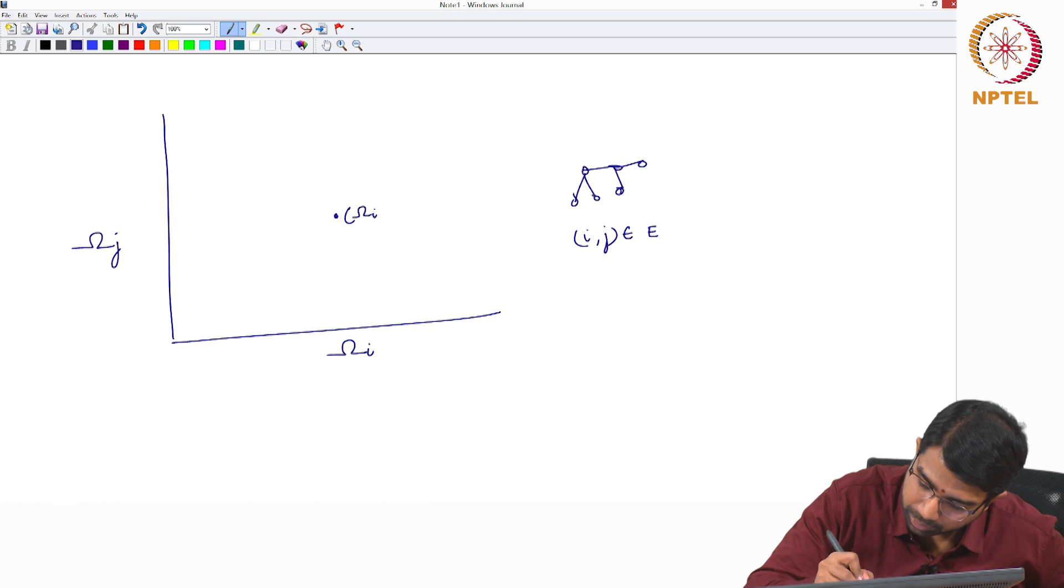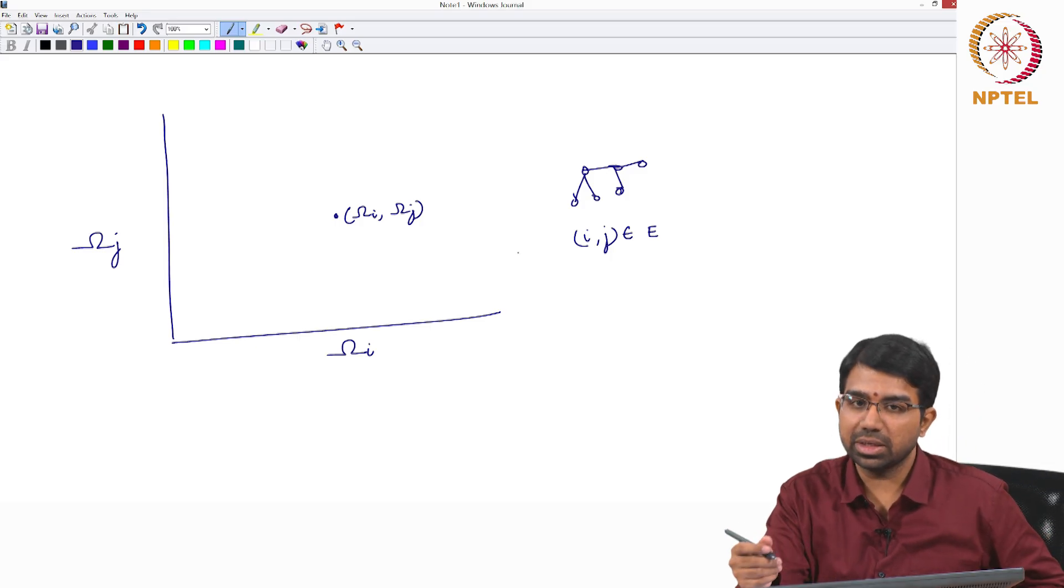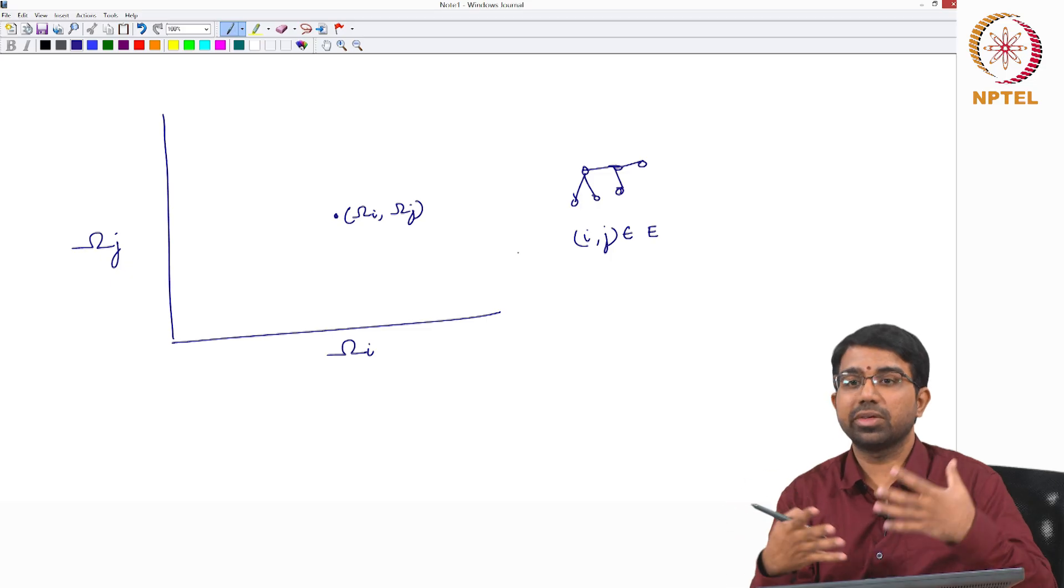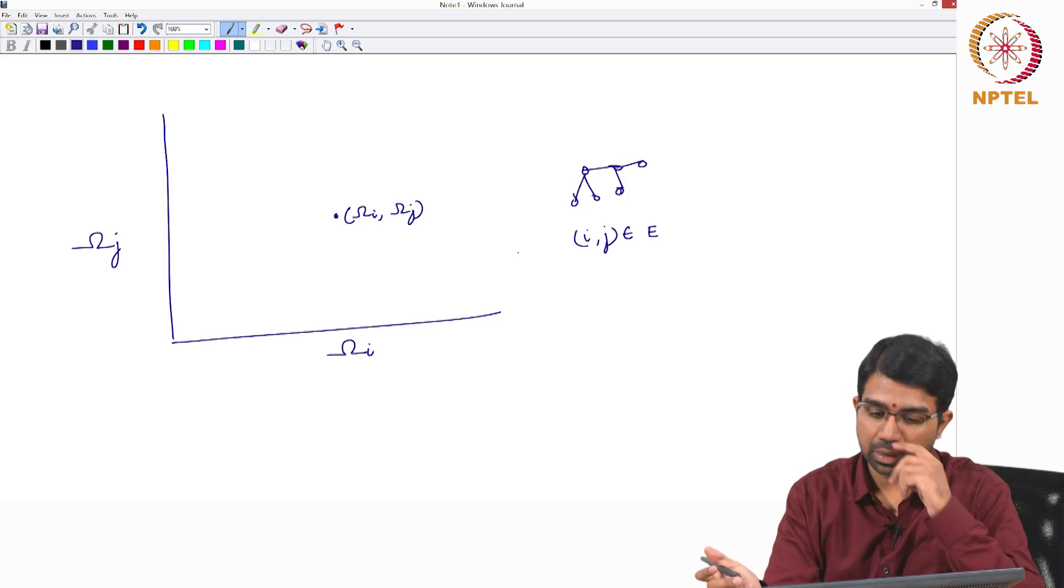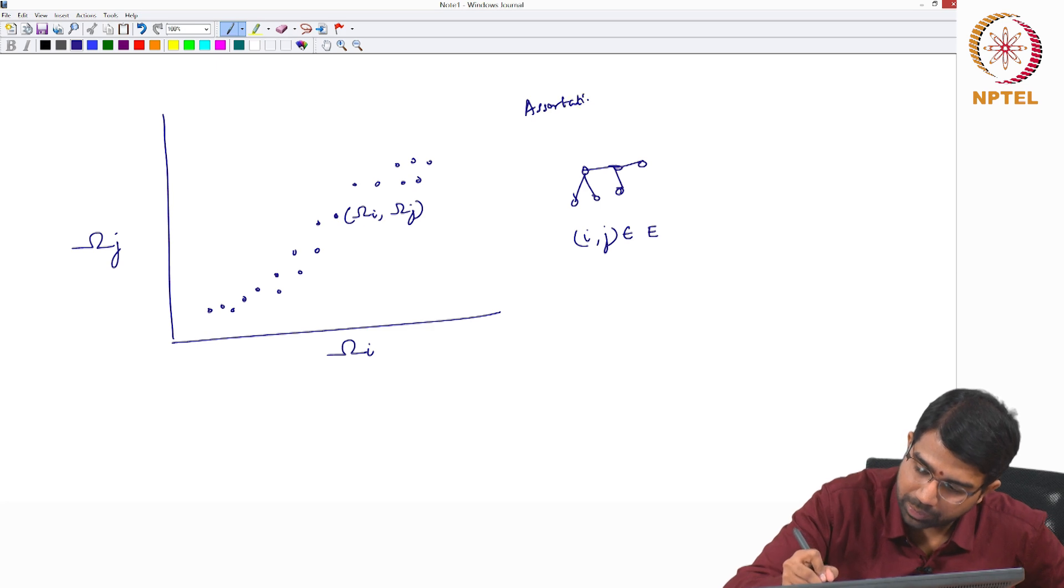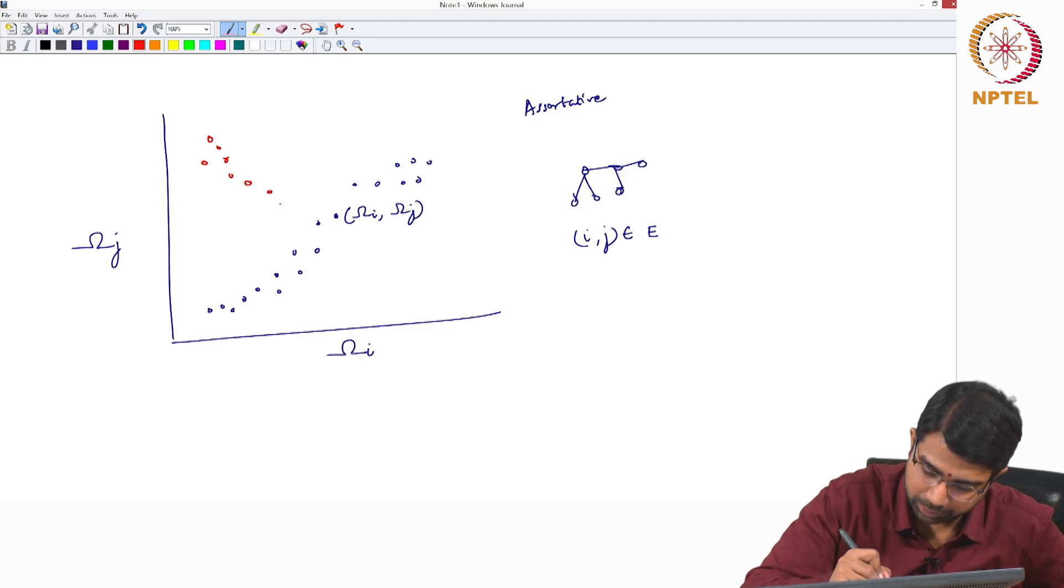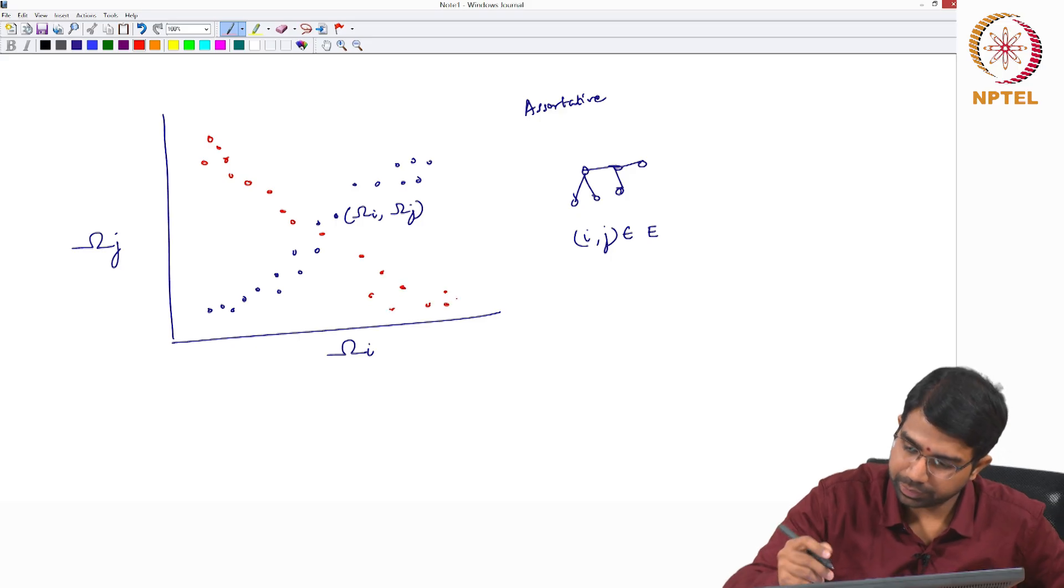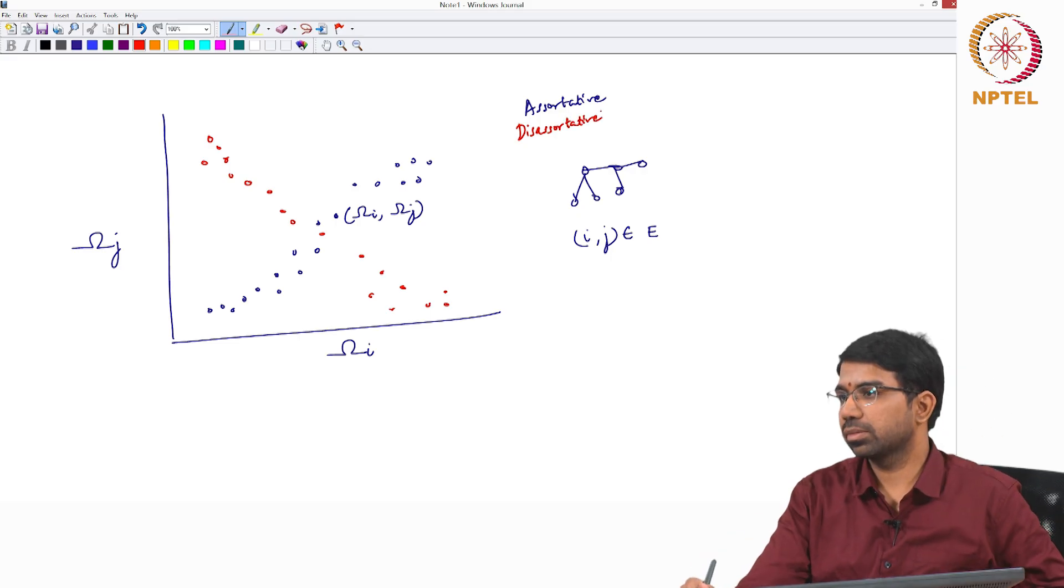Two nodes of high betweenness centrality connect to nodes of high betweenness centrality. And you can essentially make a plot of this sort. If you end up with a plot that looks like this, it is going to be assortative. If you end up with a plot that looks like this, it is going to be disassorted. Does that make sense?